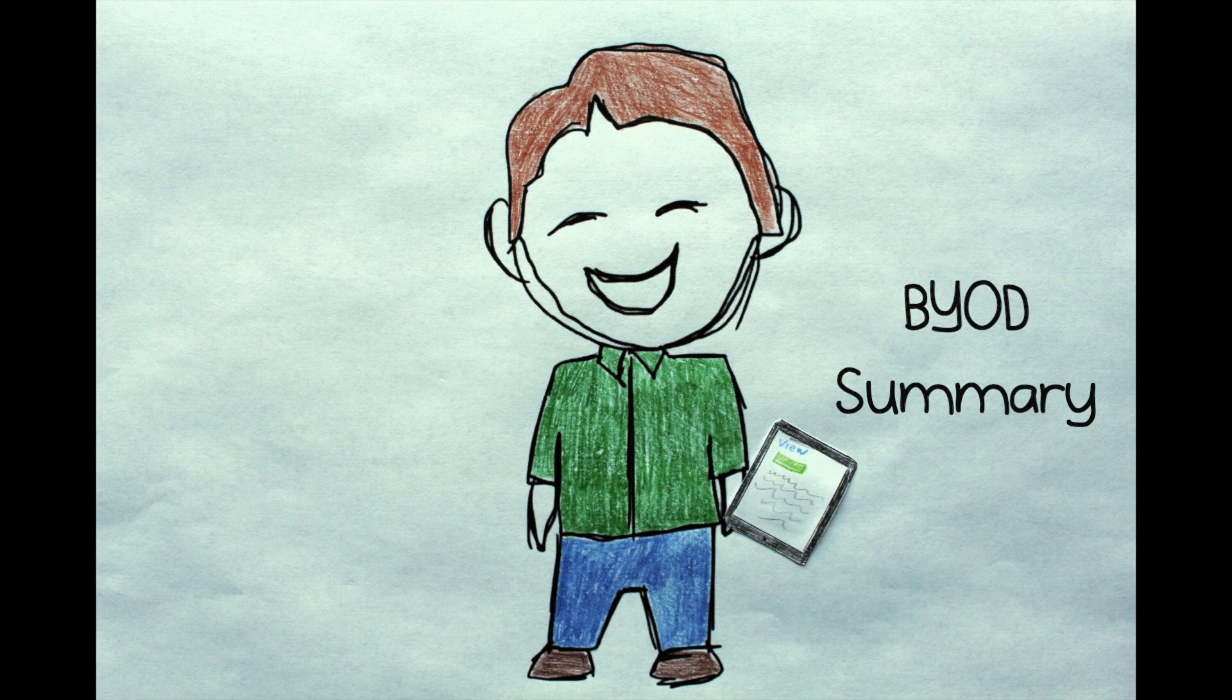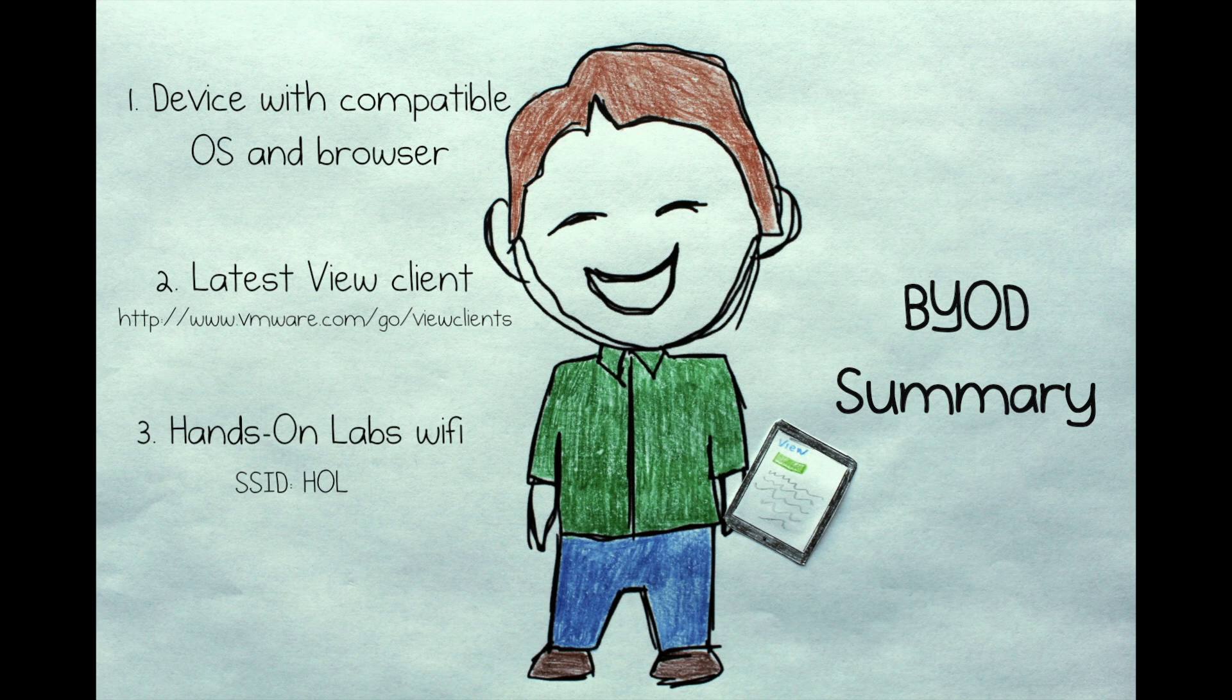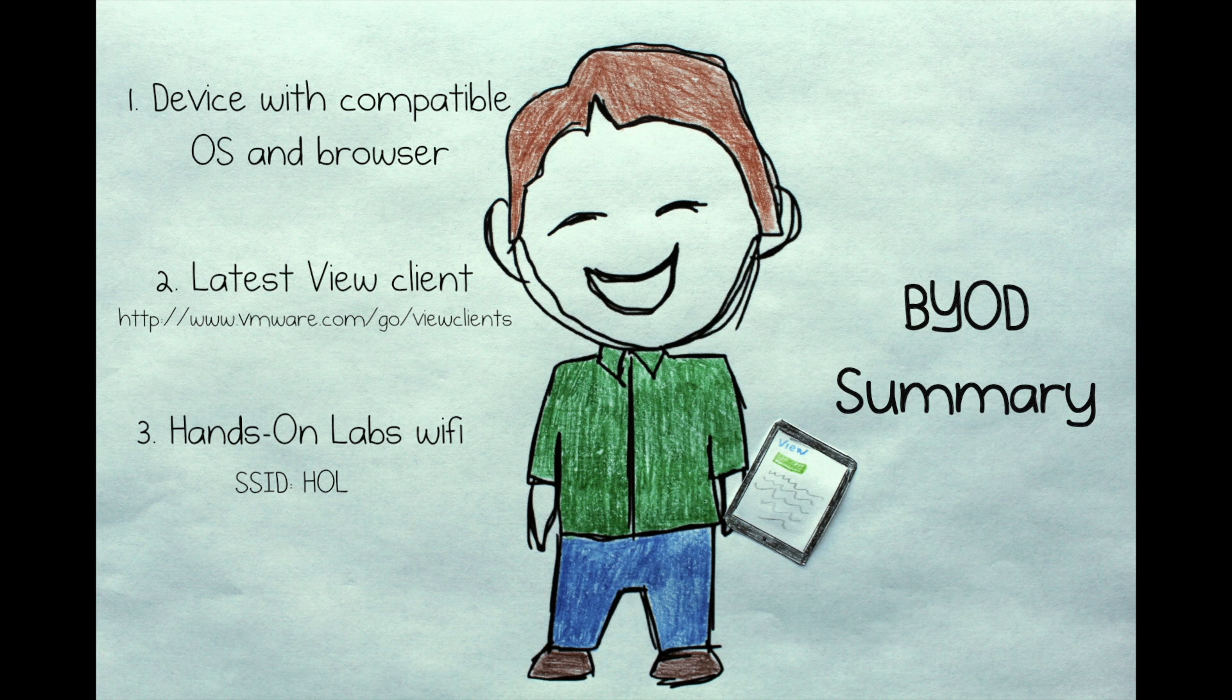To recap, for Bring Your Own Device, you'll need a device with a compatible OS and browser. You should have the most recent VMware View Client installed on your device. You'll need the activation code you get from the seating desk. Connect your device to the hands-on labs Wi-Fi and open a web browser to launch your lab.